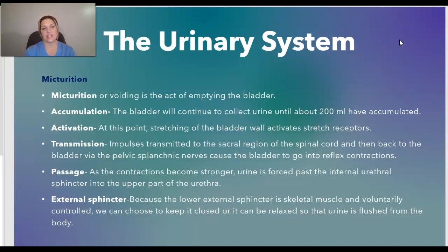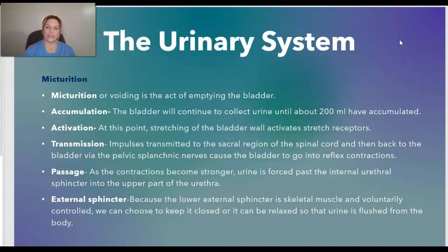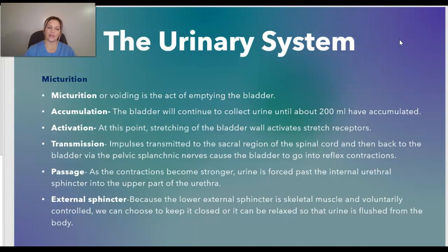Micturition is voiding — the active emptying of the bladder. The bladder continues to collect urine until about 200 mL have accumulated. At that point, stretching of the bladder wall activates stretch receptors. Impulses are transmitted to the sacral region of the spinal cord and back to the bladder via pelvic splanchnic nerves, causing the bladder to go into reflex contractions. As contractions become stronger, urine is forced past the internal urethral sphincter into the upper part of the urethra, and then the external sphincter, which is voluntarily controlled, allows passage of urine.